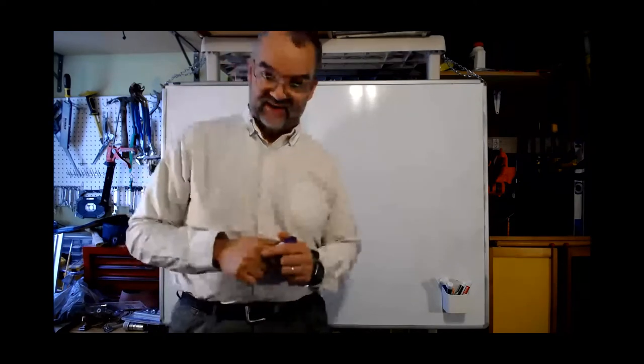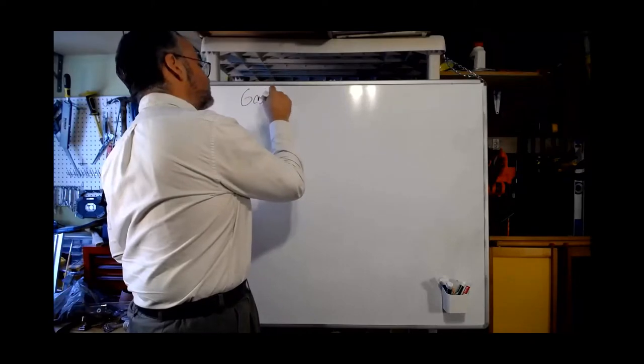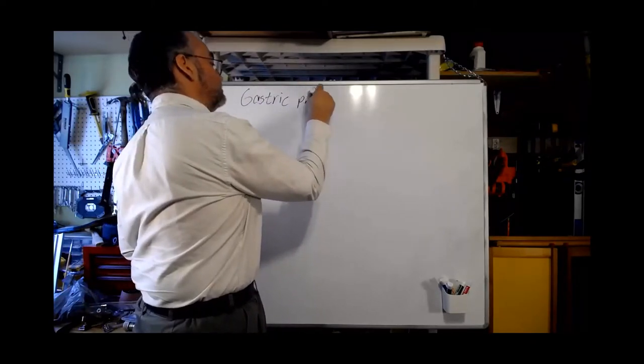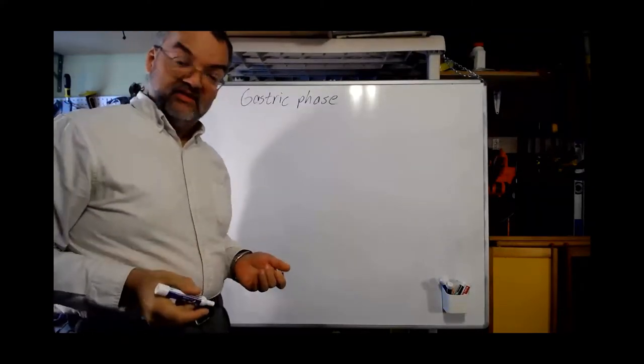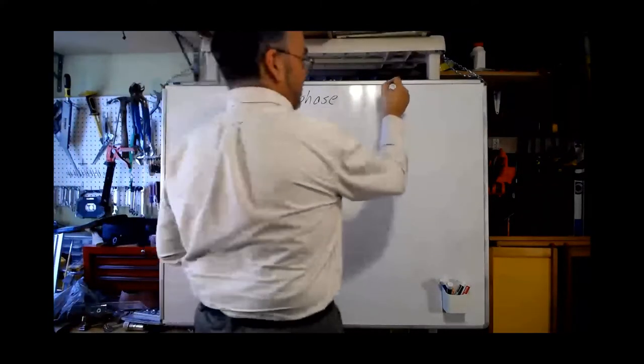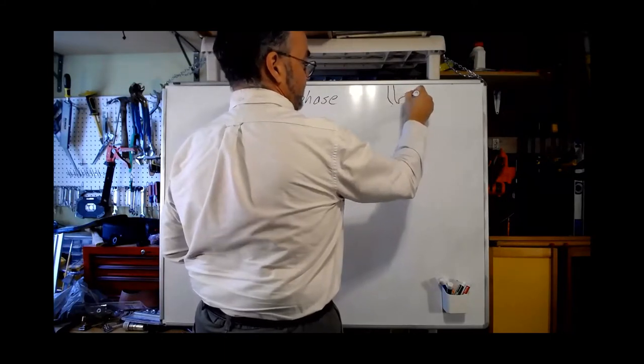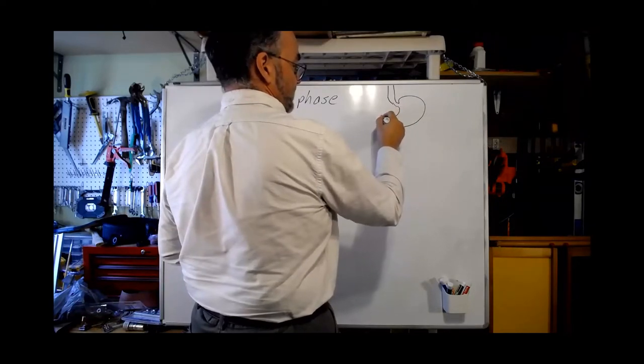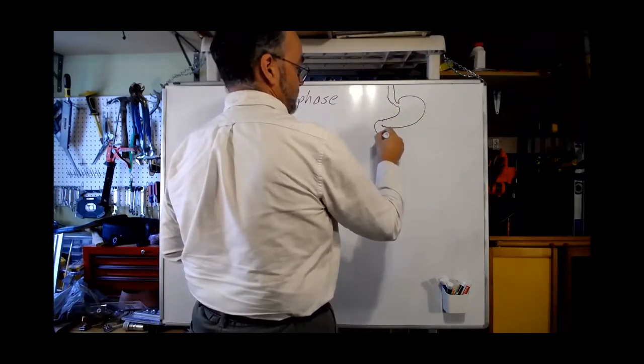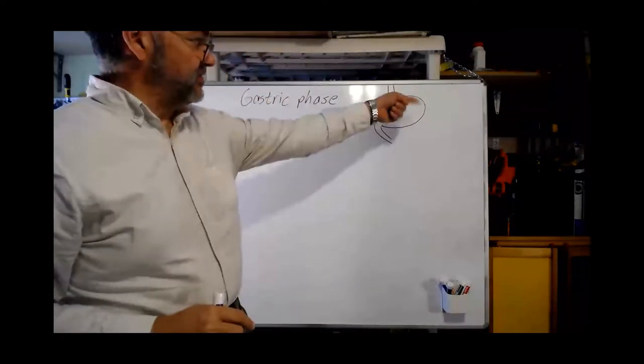All right, let's talk about the gastric phase of digestion. The word gastric implies stomach. So on our diagram, we had our esophagus coming down, and that led into this organ that was then going to lead into the first part of the small intestine. So here's our stomach.